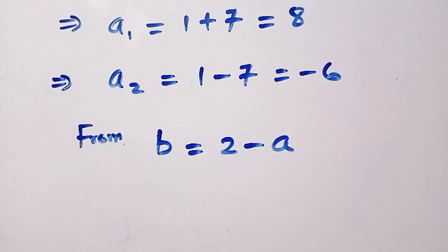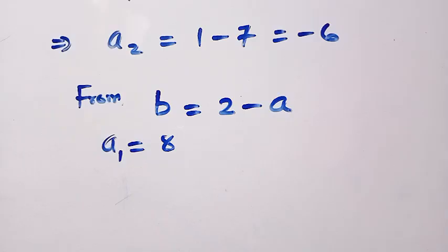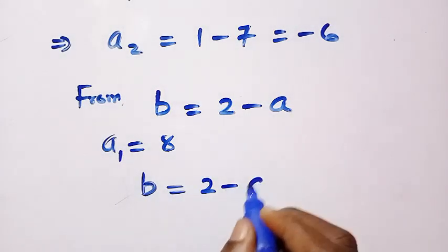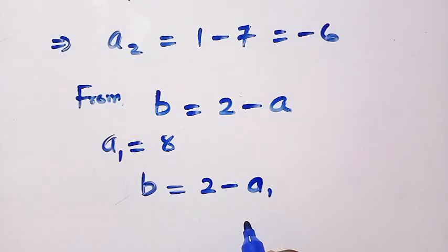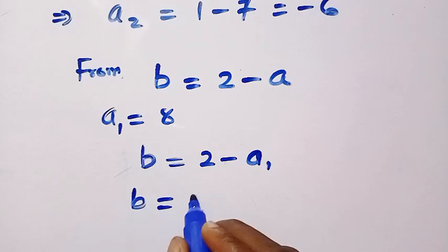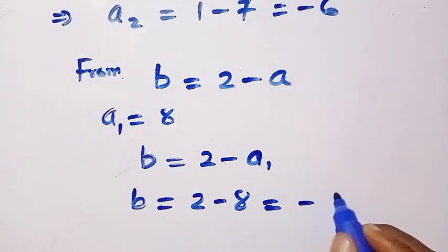For a equals 8 which is our a1, therefore we are going to have b equals 2 minus a1. Then by replacing this we are going to have b equals 2 minus 8 and this gives us minus 6.